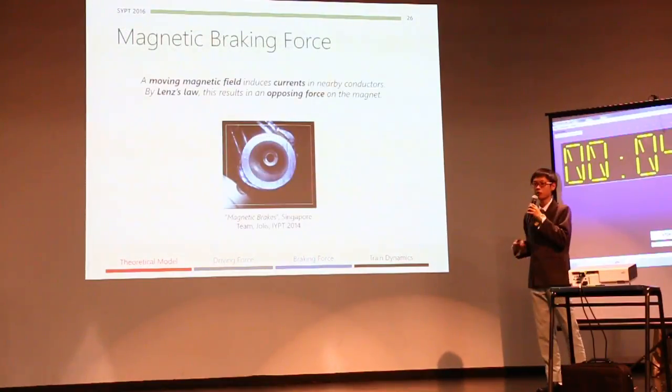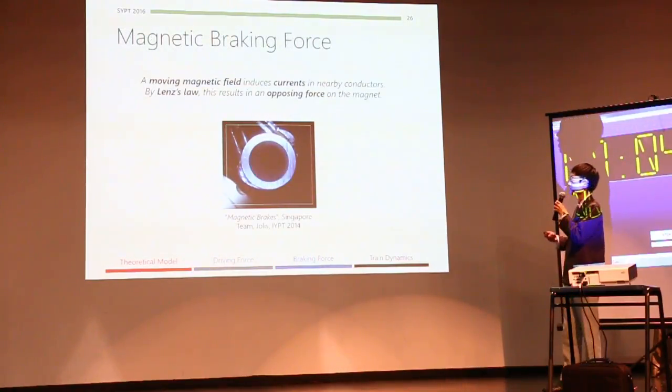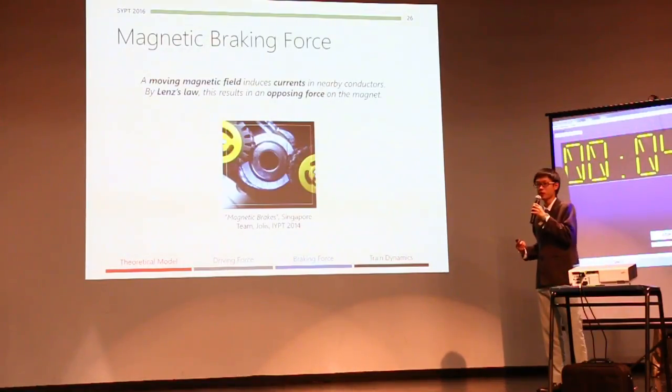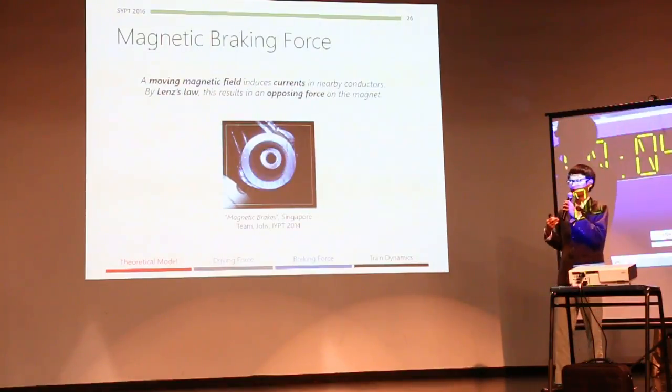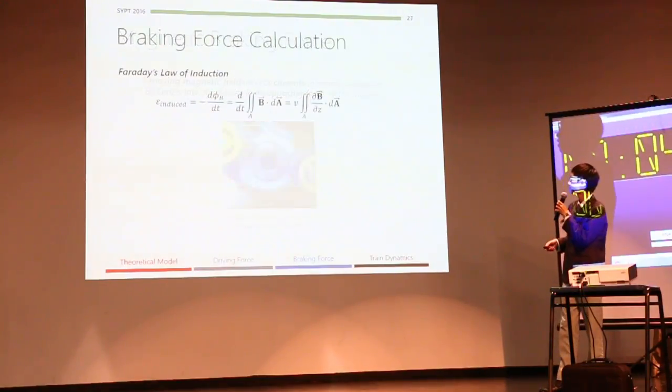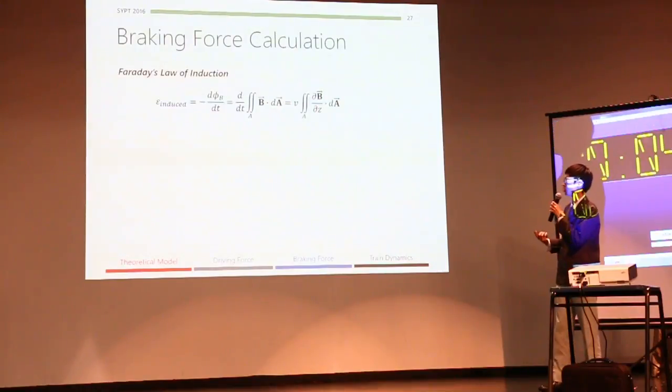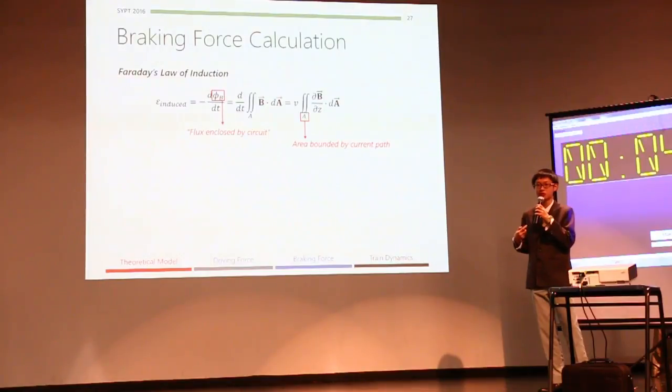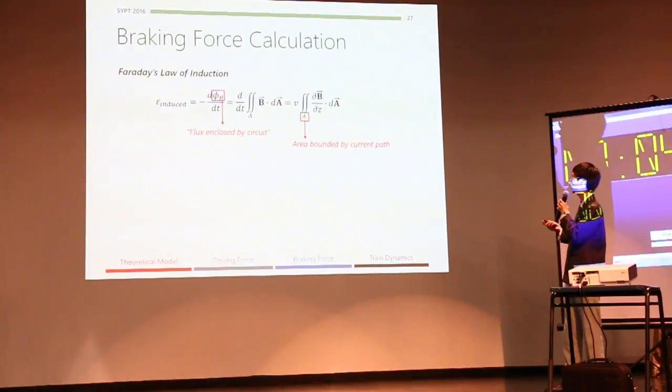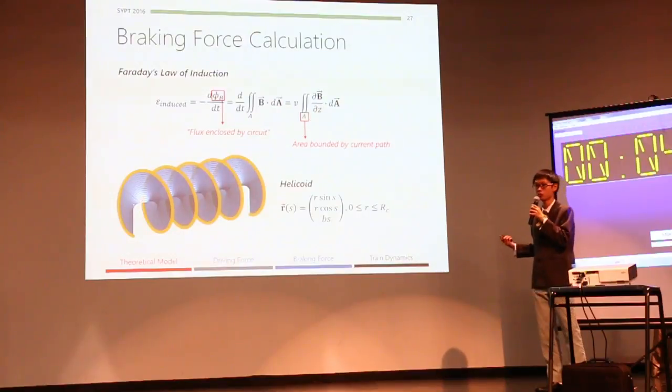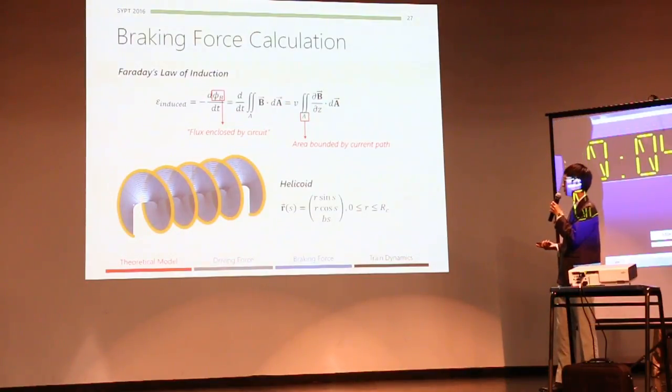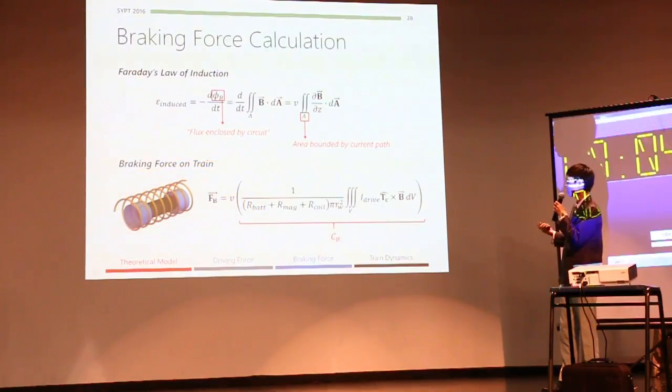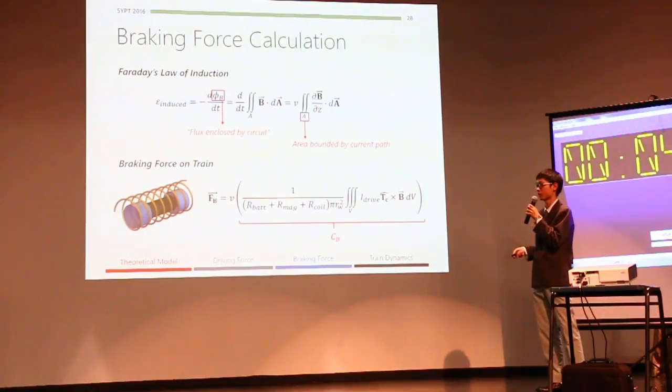Now, moving on, we know that a moving magnetic field will induce currents in nearby wire conductors, and by Lenz's law, this will result in an opposing force on the magnet. We therefore expect that as our train moves through the wire coil, there is an opposing magnetic retarding force. Now, to quantify this, we use Faraday's law. And we know that in Faraday's law, the magnetic flux is defined as a surface integral over an area bounded by the current path. Therefore, in our case, we should consider a helicoid, which is bounded by the wire helix. This allows us to calculate the magnetic braking force on our train as such, and we know that this force is linearly dependent on the speed of the train.